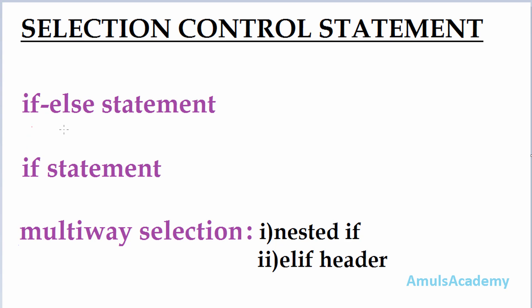The first type is the if-else statement, the second is the if statement, and the third one is multi-way selection. First we will see how the if-else statement works and how we can use this statement in our program.